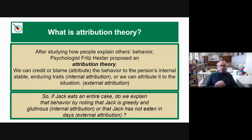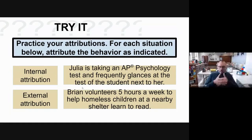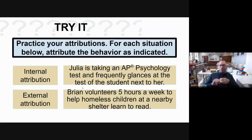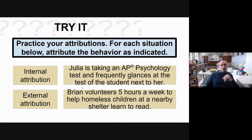Let's try some examples. Julia is taking an AP Psychology test and frequently glances at the test of the student next to her. If I make an internal attribution, I'd say she is a cheat, she has no moral compass - all internal assumptions about who she is. Brian volunteers five hours a week to help homeless children at a nearby shelter learn to read. If I make an external attribution, I might think his high school has a community service requirement - that's an external reason.